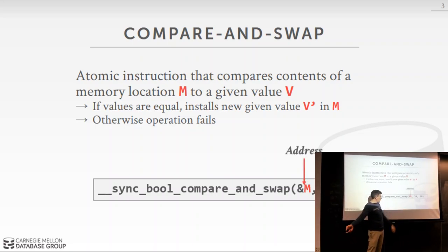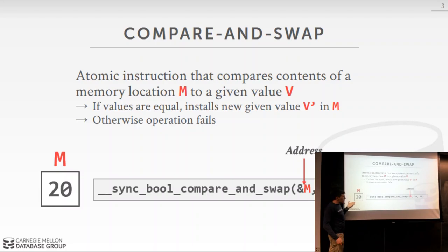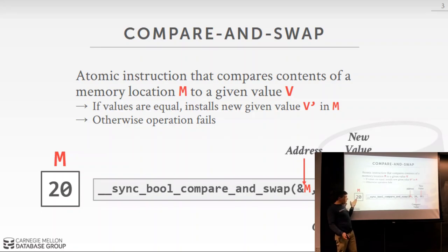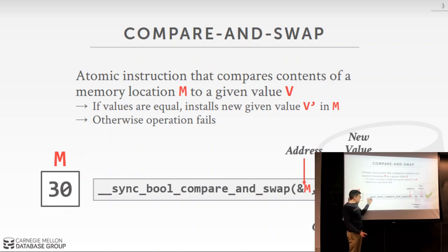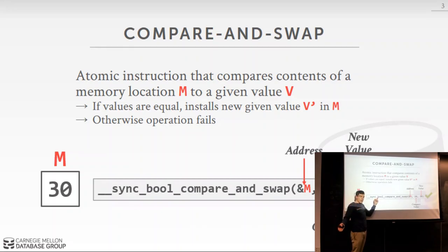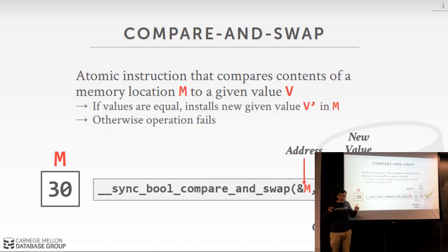In this example, we invoke a compare and swap on a memory location to check whether it has an integer value and install a new one. The first argument to the intrinsic is the address — some location in memory with a current value. Then we give it our compare value to check whether it matches. If it does, we're allowed to install our new value. This particular command is called `__sync_bool_compare_and_swap`, and it returns true or false to tell you whether the compare and swap was successful.